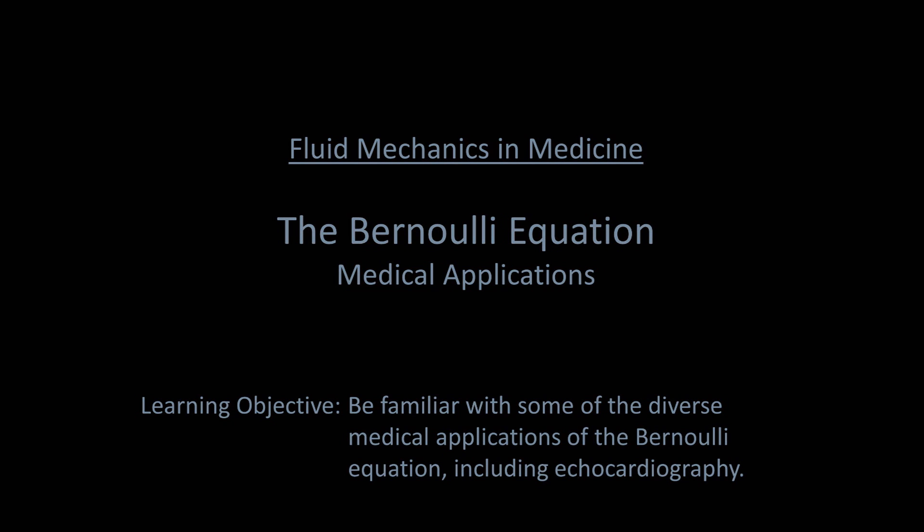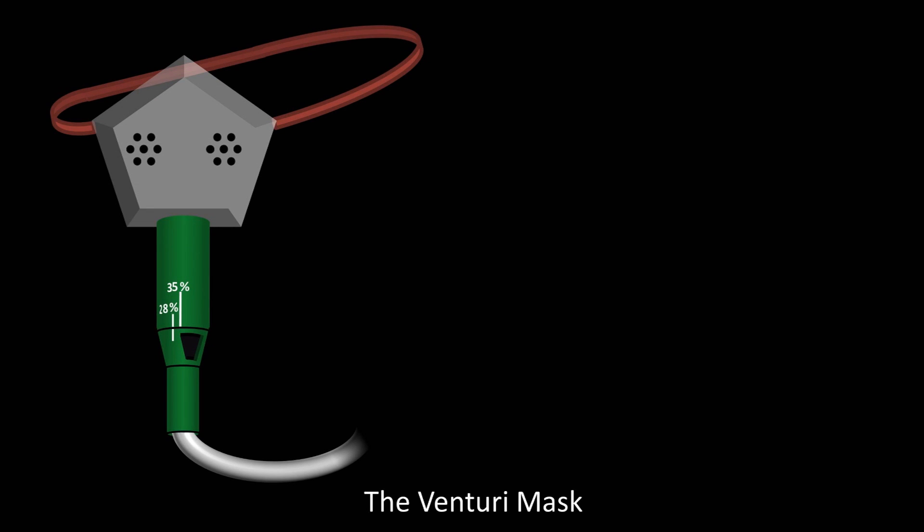The first will be a qualitative example, something called the Venturi mask. Here is a cartoon representation of what a Venturi mask looks like. It is an oxygen mask, where the grey pentagon represents the mask as it fits over a patient's mouth and nose, with a red strap going around the head to hold it in place. The two clusters of seven holes in the mask are exhalation ports where carbon dioxide-rich air, expired from the patient's lungs, can be released into the room.